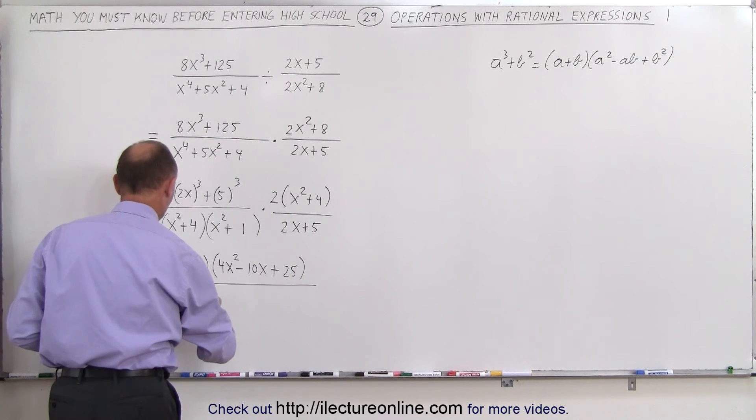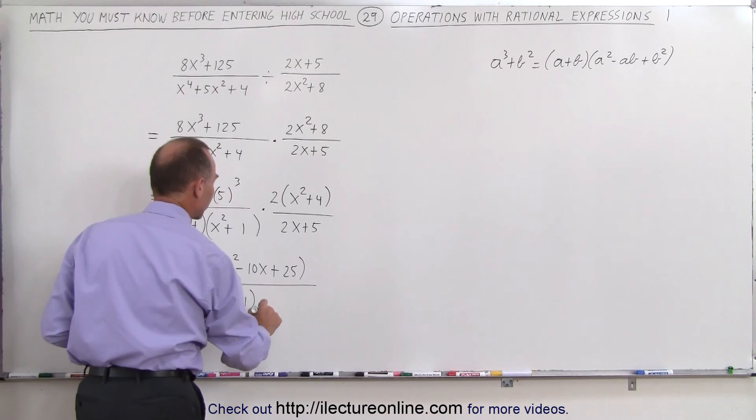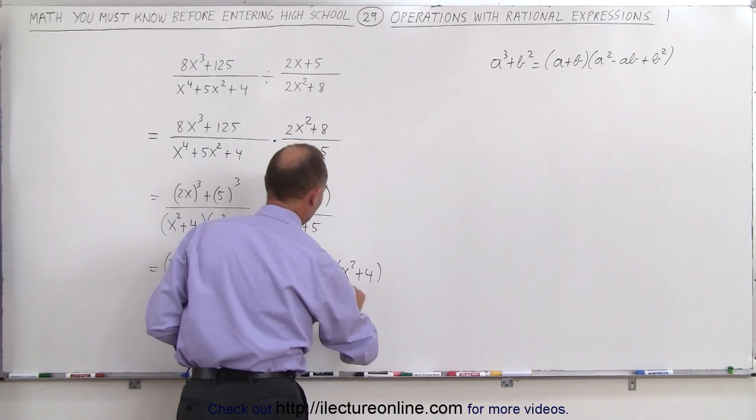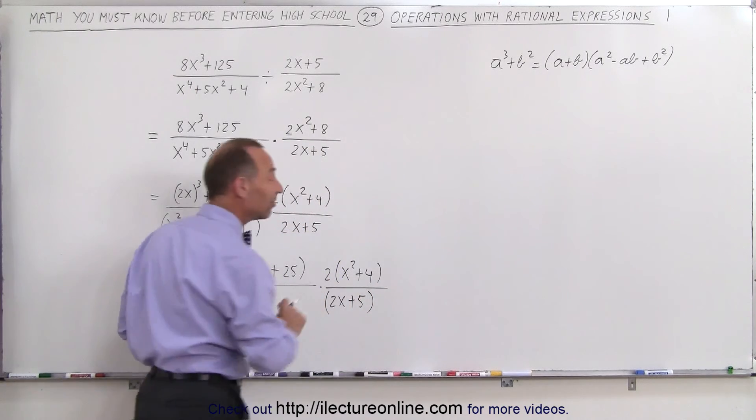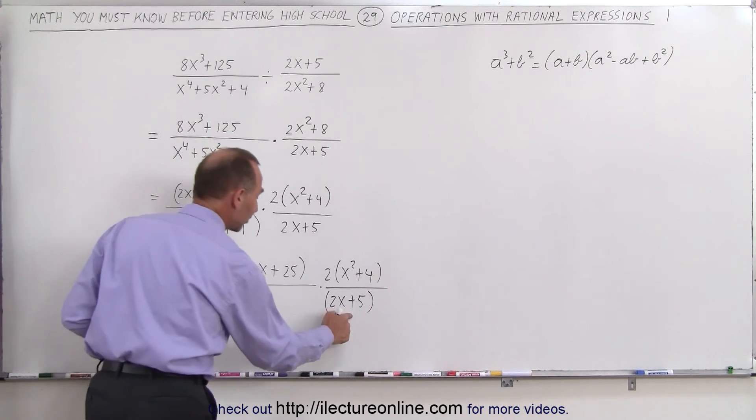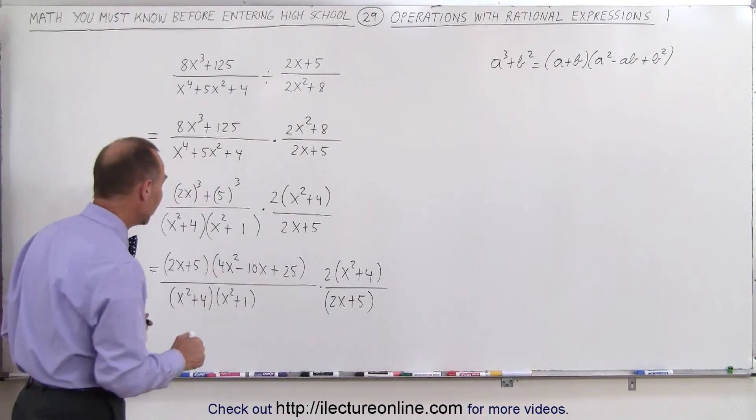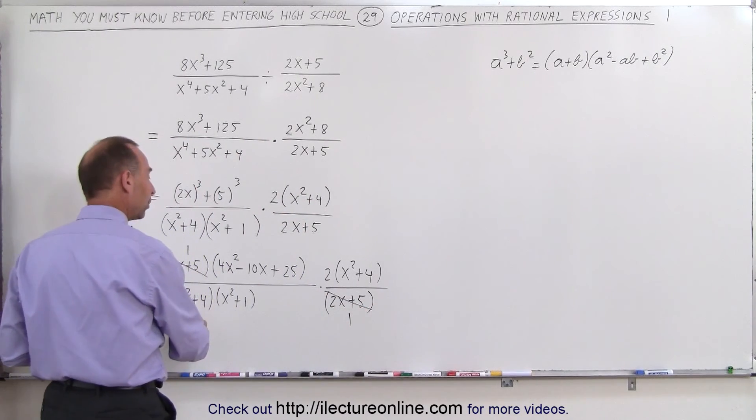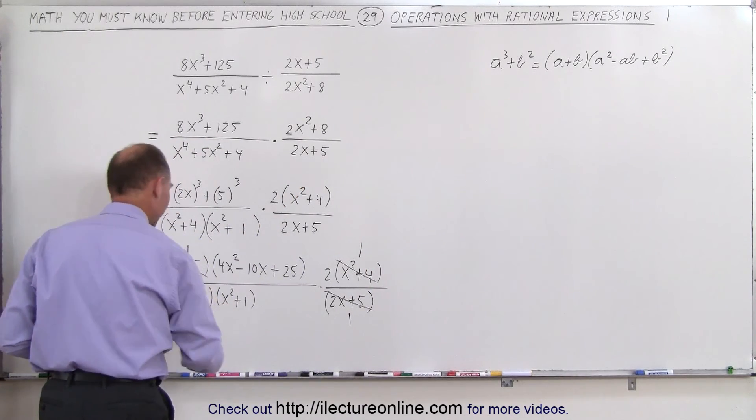Divided by what we have here, which is x squared plus 4 times x squared plus 1, and then times 2 times x squared plus 4 divided by 2x plus 5. Now we can see that there's some things we can cancel out. We have a 2x plus 5 here, we have a 2x plus 5 there. Everything is multiplied, there's no addition or subtraction anywhere, so we can see that this can be canceled out with this. And we have an x squared plus 4 and x squared plus 4, this can be canceled out with this. It looks like that's about all we can simplify.